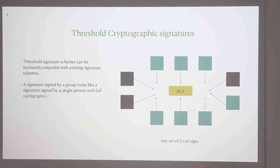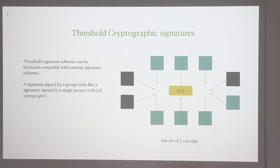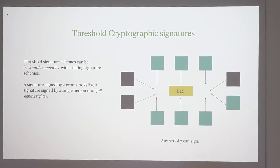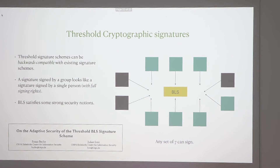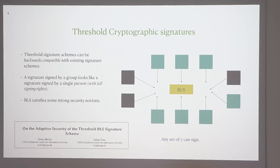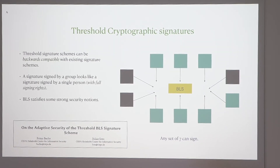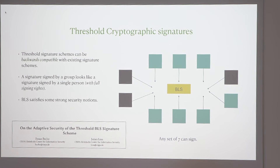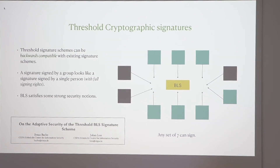The BLS signature scheme is very easy and nice to thresholdize — you just thresholdize it without doing anything special. It also satisfies some stronger security notions, in particular something called adaptive security, and there's been a nice recent paper on this if you're interested.